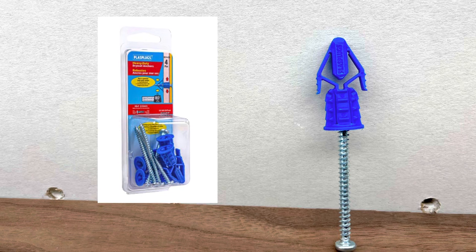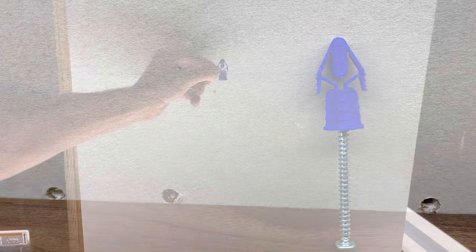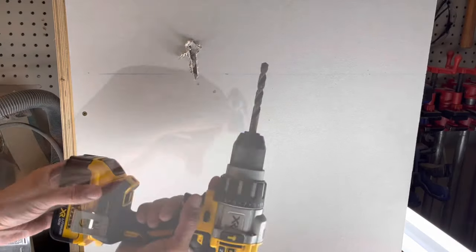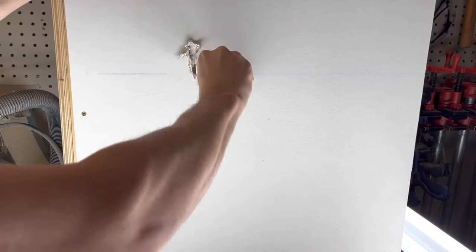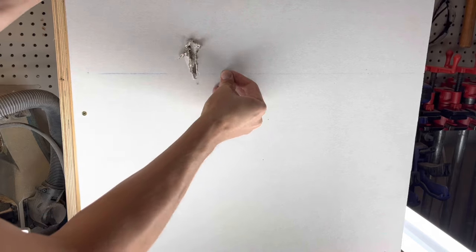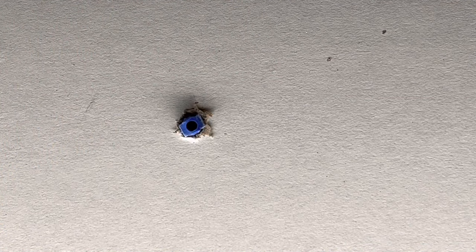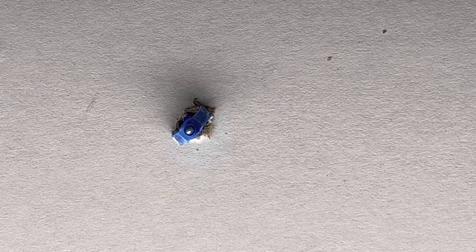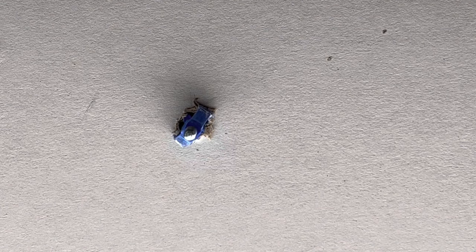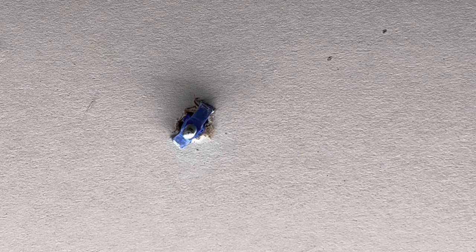Next up we have the blue plaz plug anchor. This anchor requires a 3/8 hole pre-drilled into the drywall before pushing the anchor in flush. Once the anchor is pushed in flush, you can attach the screw. It goes through the center of the anchor and when tightened, the wings expand to grab in the wall.